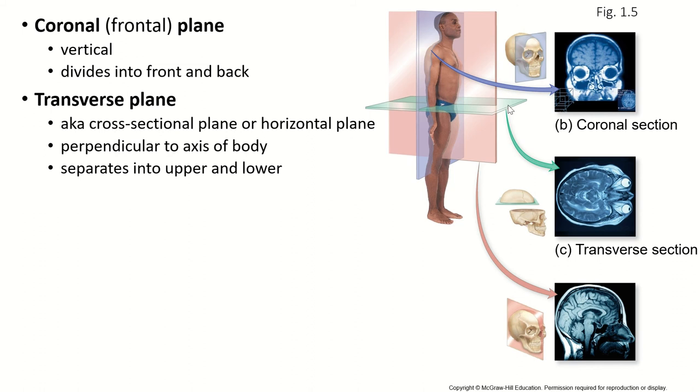Next up is a transverse plane. Transverse planes go horizontally parallel to the floor. There's an infinite number of transverse planes that we can make anywhere up or down. We can make a transverse plane through the body. A transverse plane through the cranium here shows us the eyes and the brain.